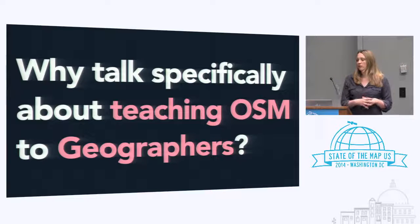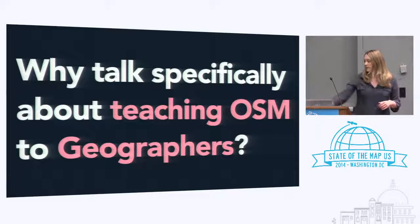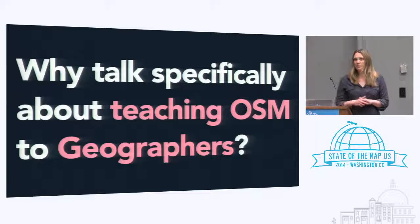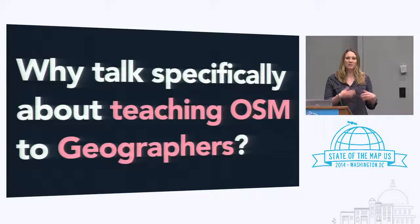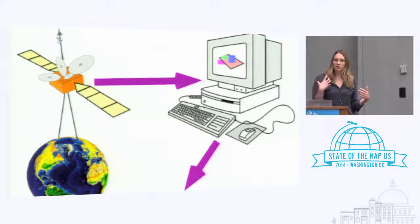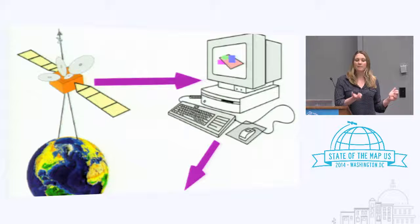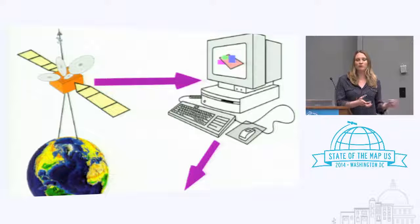Why is it interesting or important to talk specifically about teaching OpenStreetMap to geographers? Traditional geography curriculums include GIS, remote sensing, and other sciences that run in parallel to OSM. OSM has come up with alternative solutions where historically there hasn't been a lot of awareness. Students have an existing paradigm they're working with, but it can be pretty abstract trying to relate those paradigms to OpenStreetMap, and there are a lot of confusions and mistakes that can happen.